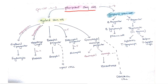With the help of colony stimulating factor and interleukin-3, from pluripotent stem cell we get myeloid stem cell. And with the help of interleukin-7, we get lymphoid stem cell.